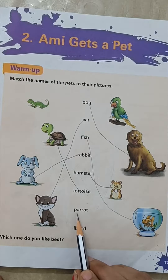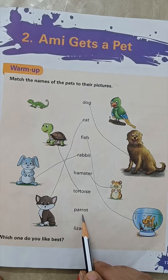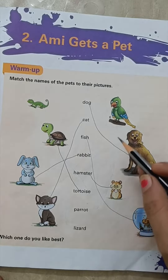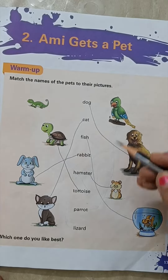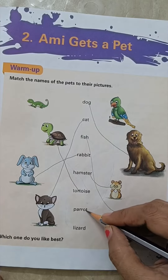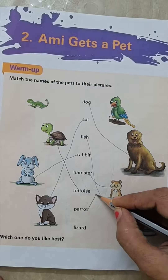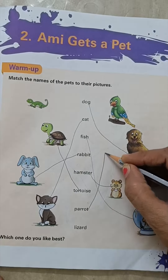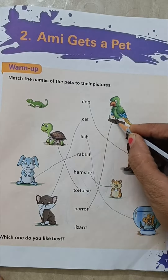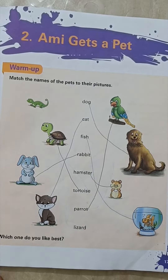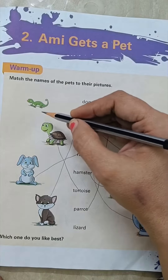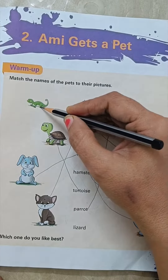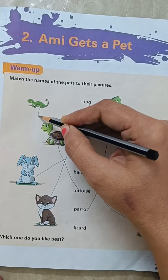Next is parrot. Where is the picture of parrot? This is a picture of parrot. We will match the parrot with the picture of parrot. Now next is lizard — so this is lizard.